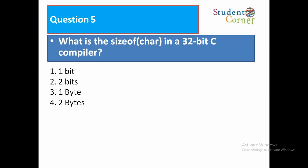Question 5: What is the size of char in a 32-bit C compiler? Option 1: one bit. Option 2: two bits. Option 3: one byte. Option 4: two bytes. Character takes one byte of memory, so the answer is option 3: one byte.